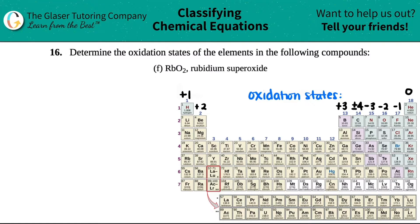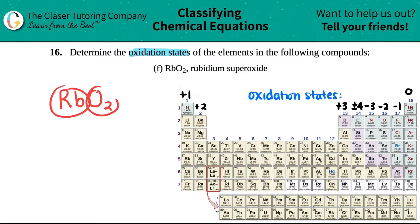Number 16: determine the oxidation states of the elements in the following compounds. We have RbO₂, which is rubidium superoxide — not just oxide, superoxide.